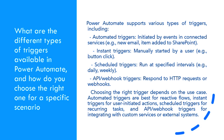What are the different types of triggers available in Power Automate, and how do you choose the right one for a specific scenario? Power Automate supports various types of triggers, including: automated triggers, initiated by events in connected services (e.g., new email, item added to SharePoint); instant triggers, manually started by a user (e.g., button click); scheduled triggers, run at specified intervals (e.g., daily, weekly); and API webhook triggers, which respond to HTTP requests or webhooks. Choosing the right trigger depends on the use case — automated triggers are best for reactive flows, instant triggers for user-initiated actions, scheduled triggers for recurring tasks, and API webhook triggers for integrating with custom services or external systems.